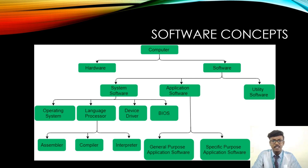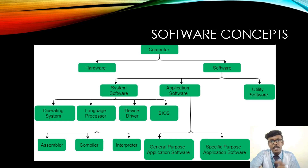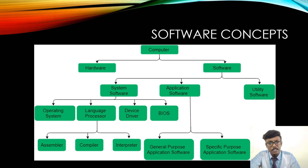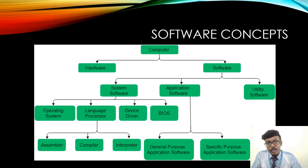The operating system is written in a set of instructions, so it is also a form of software. We also have a language processor — since human language cannot be understood directly by the system, we need a proper language processor to enable better human-machine interaction. We also have device drivers and BIOS (Basic Input Output System), which are written in assembly-level or machine-level language. Any software whose instructions directly involve system hardware is called system software.